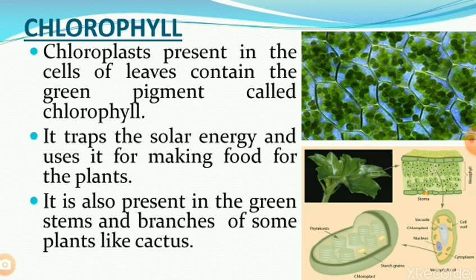Chlorophyll is a green pigment present in structures called chloroplasts, which are present in the cells of leaves. Chlorophyll traps the solar energy and uses it for making food for the plants. It is also present in the green stems and branches of some plants like cactus, and they can also perform photosynthesis.